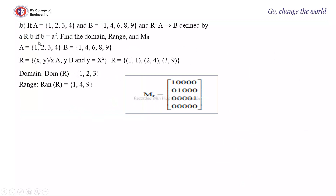Second example: if A = {1, 2, 3, 4} and B = {1, 4, 3, 6, 8, 9}, and R is a relation from A to B defined by a related to b if b = a². That means the second element should be the square of the first element. Find the domain, range, and matrix of R.